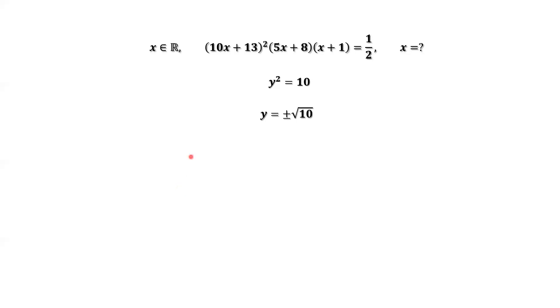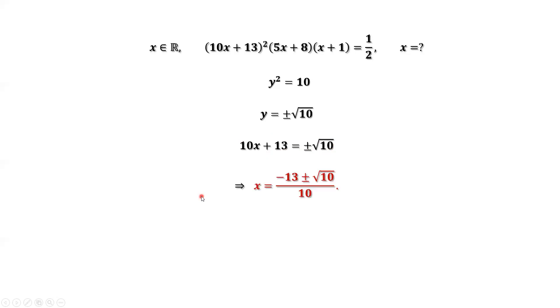By the definition of y, we have 10x + 13 equals ±√10. Solving this equation, we get the two values for x: x equals (−13 ± √10) / 10. That's all. Thanks for watching, and I'll see you next time.